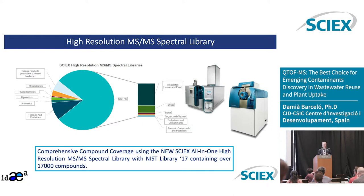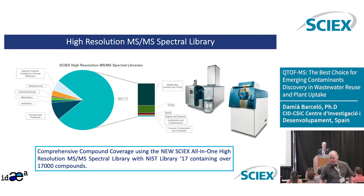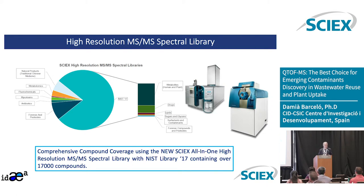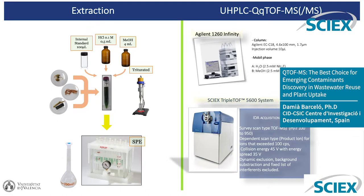The spectral library is very important when you do this type of work because you are searching for as many compounds as possible. At this moment they are using a library of around 14,000 to 17,000 compounds, probably more now. I always say to colleagues: you can identify by library, fine, but this is not the final confirmation. We are mass spectrometrists — the final match requires a real standard. Without it, you cannot say 100%. It is close, but not unequivocal identification. This is important for young researchers to understand.